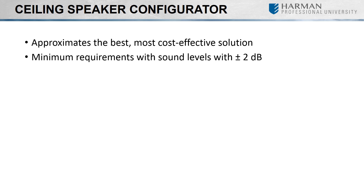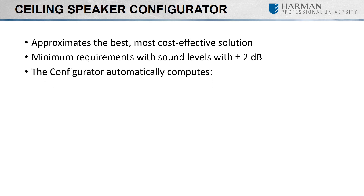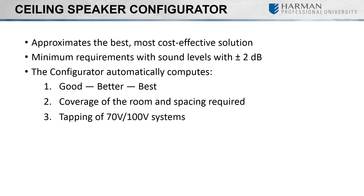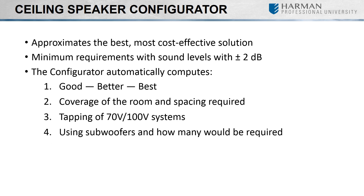Based on the floor area and ceiling height of the room, the configurator automatically computes the following: the three most economical loudspeaker models for that project; the quantity of speakers required to cover the area and how far apart to space them; how to tap them for 70-volt or 100-volt systems; and for systems using subwoofers, an included subwoofer utility tells how many subs to use. If any of these terms are not familiar to you, we will be trying to explain them through this video and others.